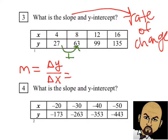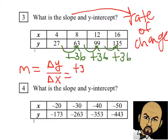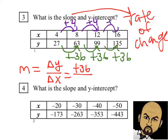Since the y values are getting bigger, it becomes positive, and we're adding 36 as we go across. So our change in y is going to be positive 36. Now let's figure out our change in x — our numbers are getting bigger by 4 each time, so our rate of change in x is going to be positive 4.